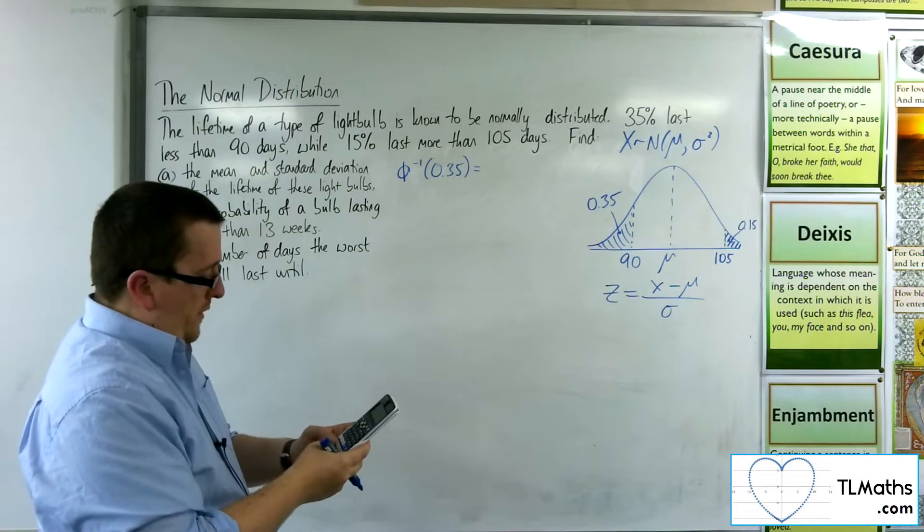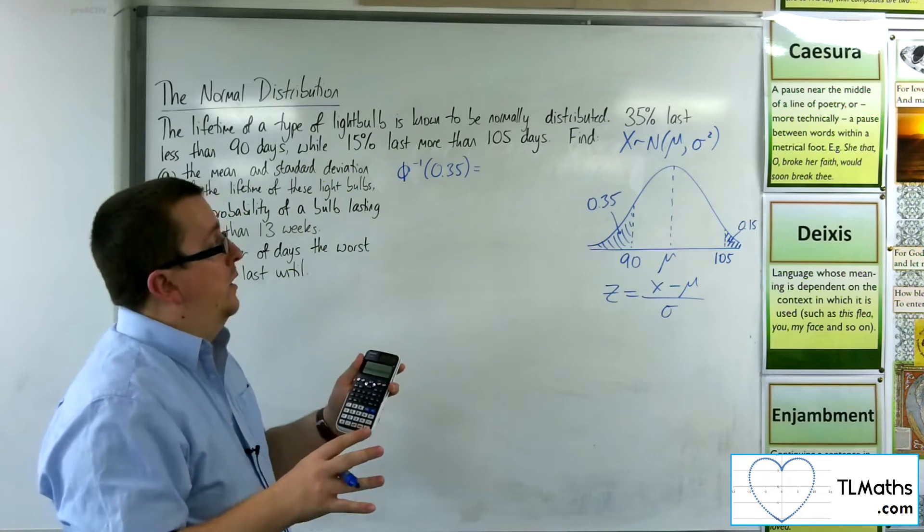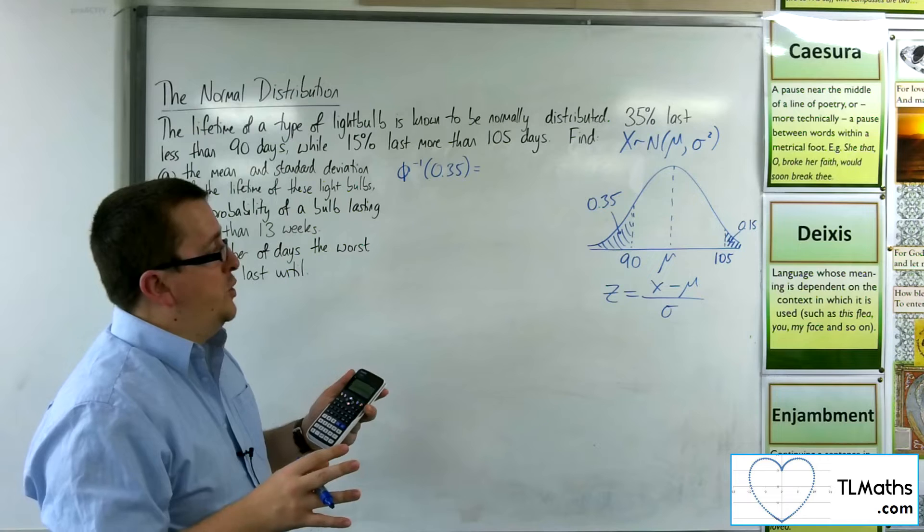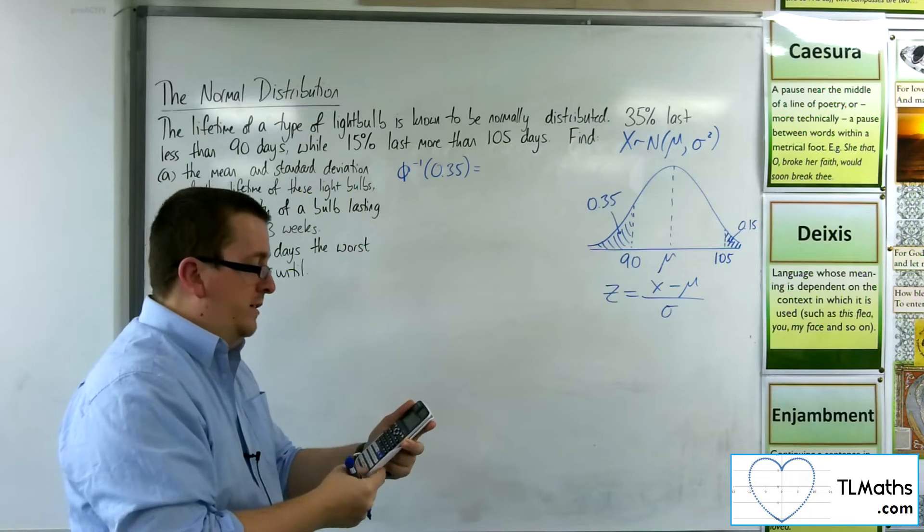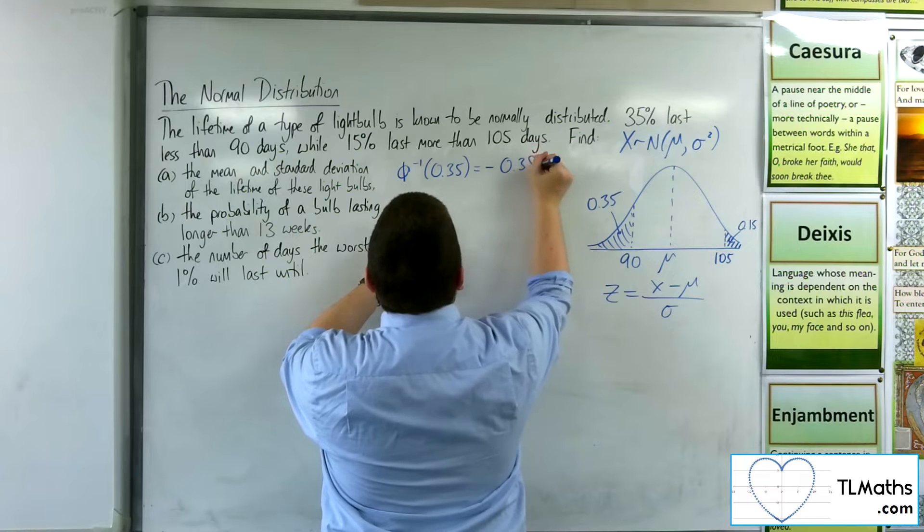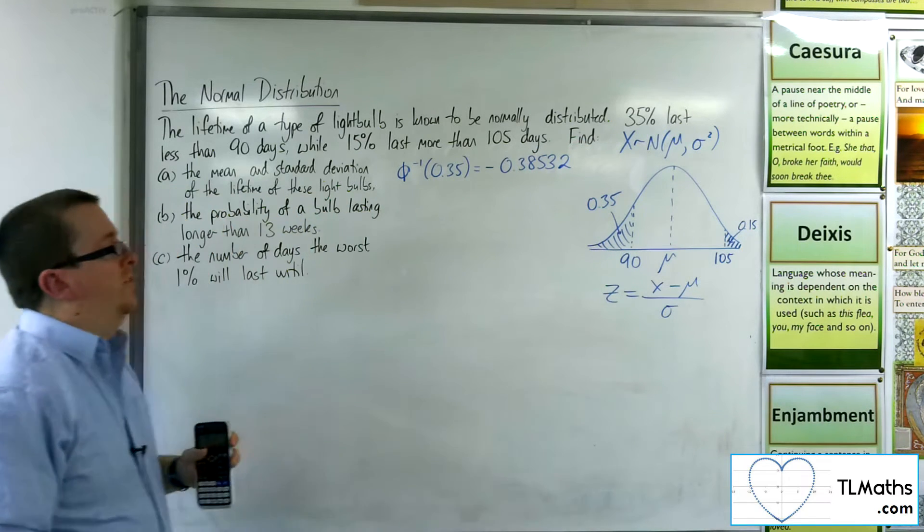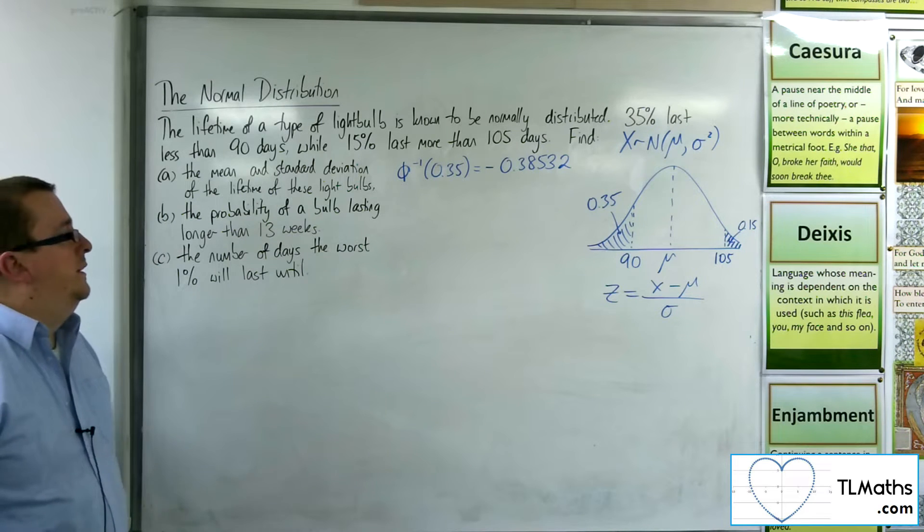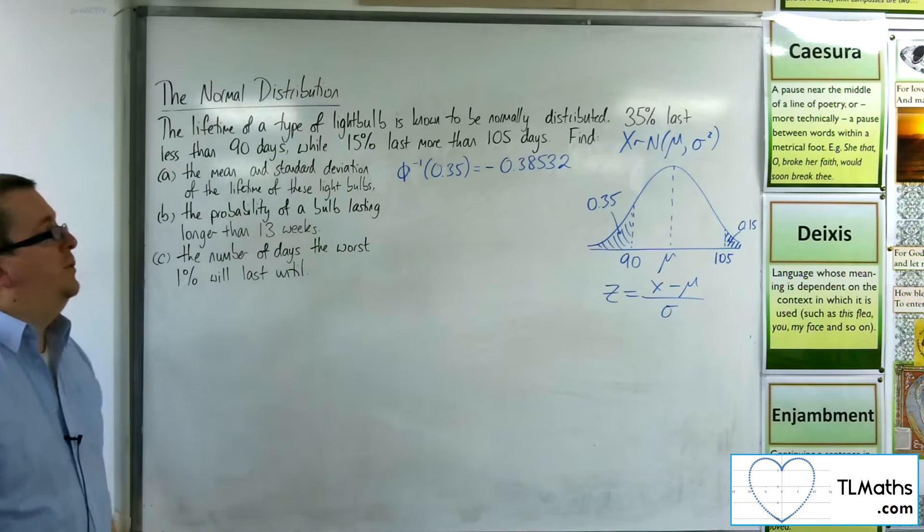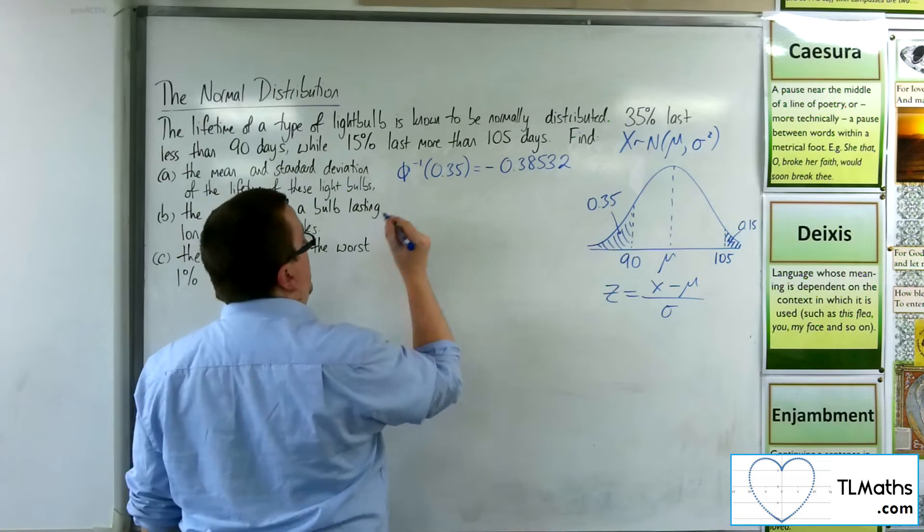The area is 0.35. Sigma is 1, mu is 0 because I don't know what they are for the original distribution. So I need to work with the standard normal here. So that gets me minus 0.38532. I'm going to go to 5 decimal places because I'm doing quite a number of calculations here. So I want to make sure it's as accurate as possible. That's my z value.